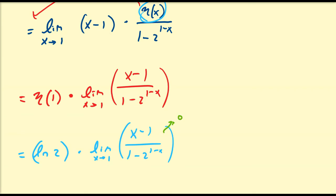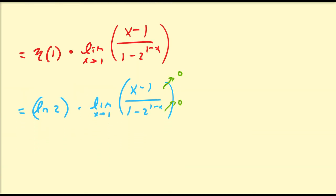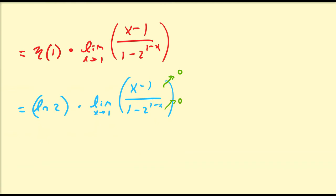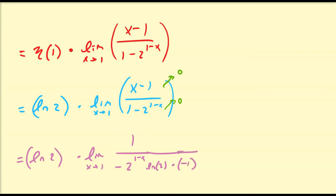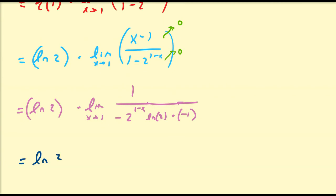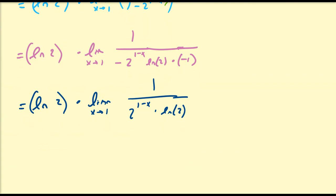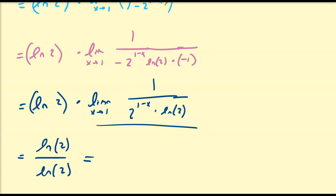As x goes to 1 both the numerator and denominator go to 0, giving a 0/0 indeterminate form, so we apply L'Hôpital's rule. The derivative of the numerator is 1. The derivative of the denominator: we have a negative sign, an exponential with base 2, times the derivative of the exponent (1−x) which is −1, so negative times negative gives positive ln(2)·2^(1−x). Taking the limit as x approaches 1: 2^(1−1) equals 1, so we get ln(2) times 1 divided by ln(2), which equals 1.